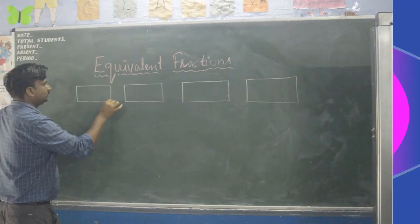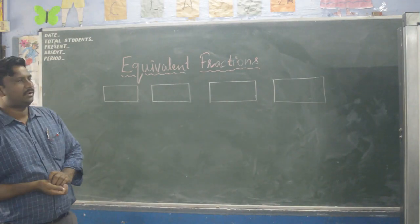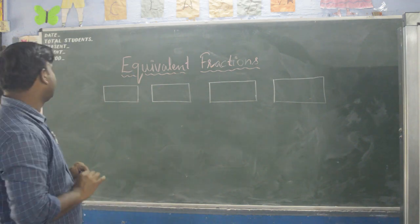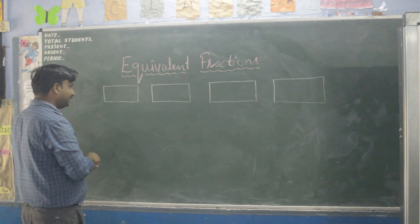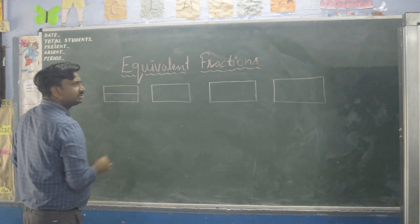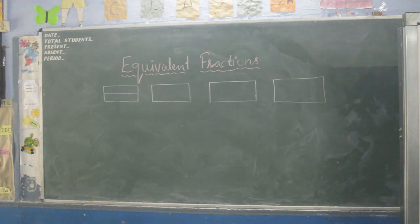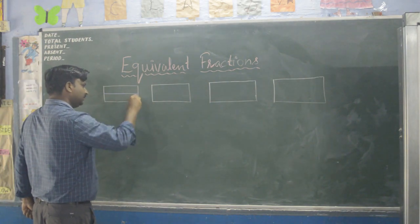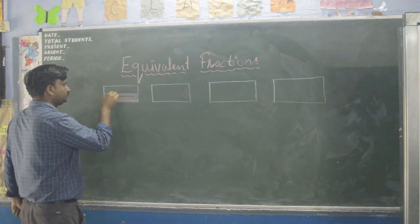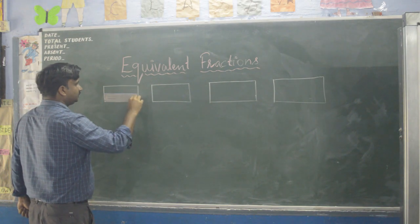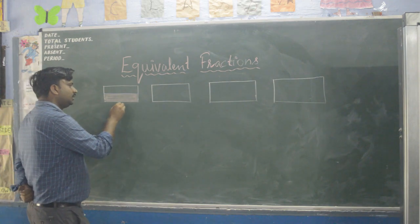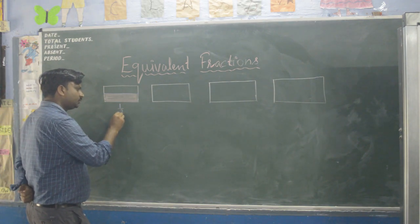Let us take a rectangle — same size rectangles. Now we have four equal rectangles. Let us divide the first rectangle into two equal parts and we are shading half. So what is the shaded portion? One upon two.